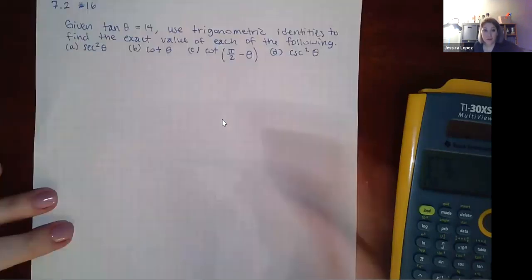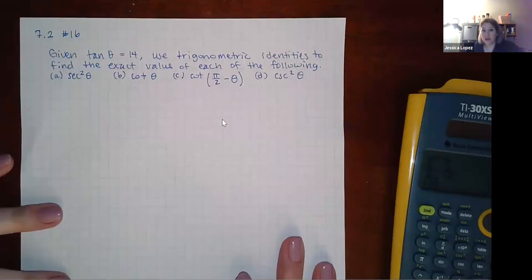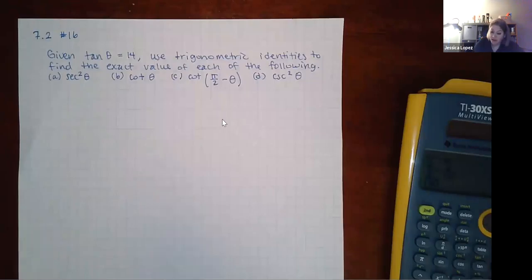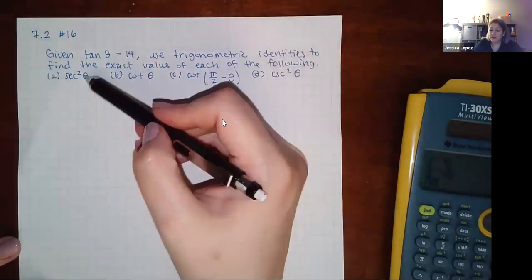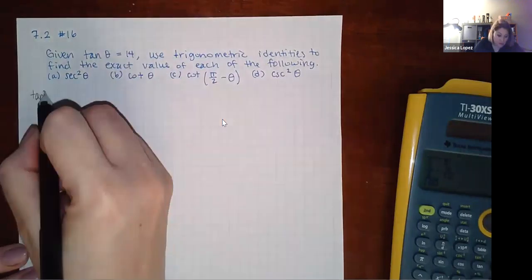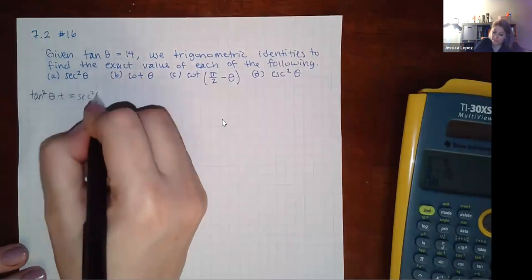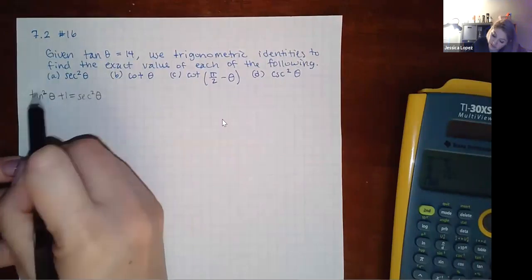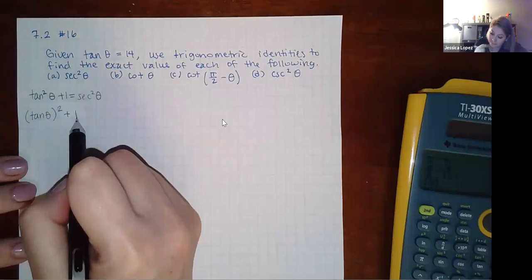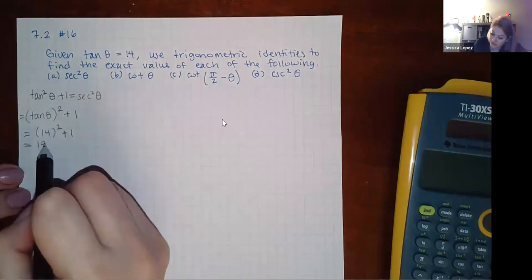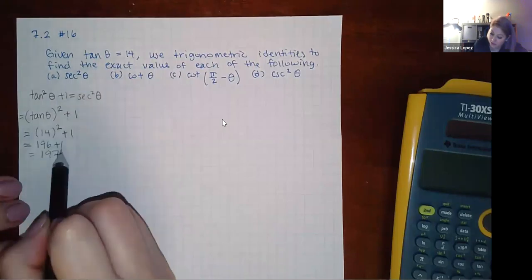Example 16: given tan θ = 14, find the exact value of (a) sec²θ, (b) cotangent of the complementary angle, and (c) csc²θ. For sec²θ: use the Pythagorean identity tan²θ + 1 = sec²θ. Substituting: 14² + 1 = 196 + 1 = 197.